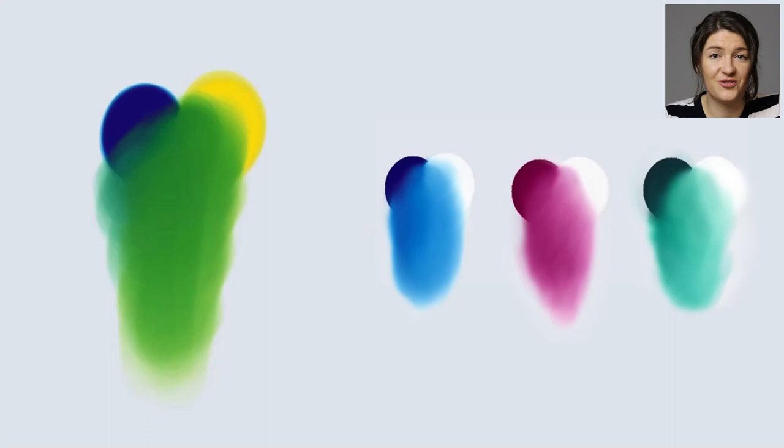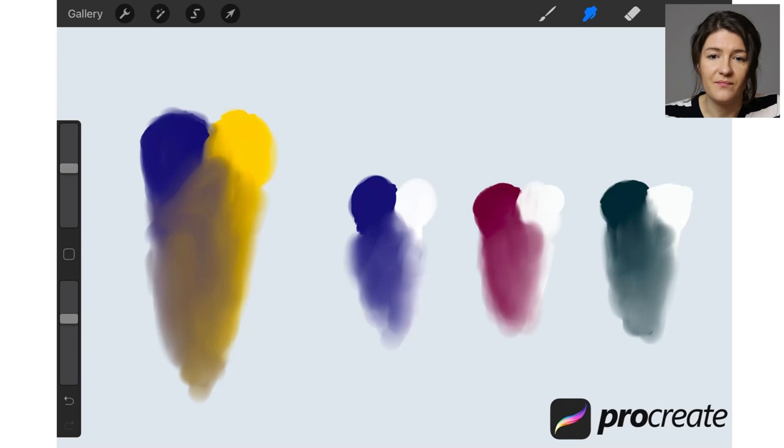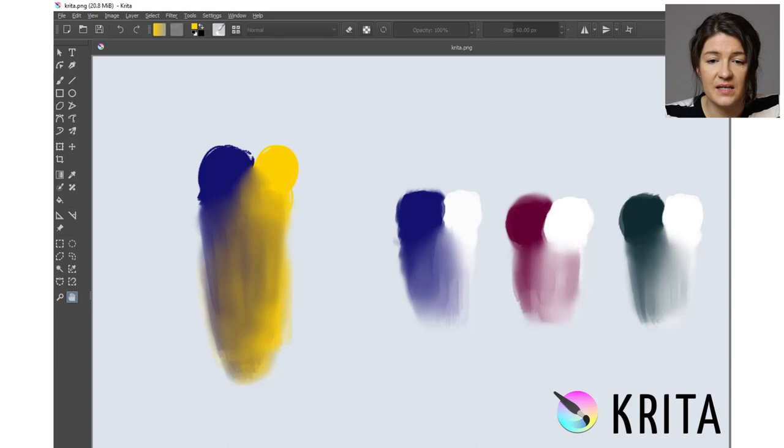None of the widely used professional painting software mixes colors naturally. If we look at Photoshop, which is a favorite tool of many professional artists, blue and yellow make gray, or this brownish-gray. And dark colors mixed with white are desaturated, not radiant, like the colors that pop up in real life. Same goes for Procreate, the most popular painting software for iPads.